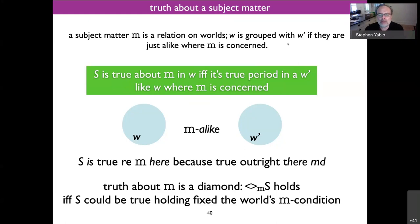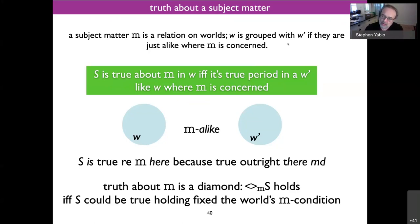A subject matter corresponds roughly to any question turned into an indirect question — like 'what you did last summer.' Worlds are in the same cell just if you did the very same things in those worlds. They're grouped together if they're just alike where the subject matter is concerned. You can think of it oftentimes as an equivalence relation, but sometimes importantly it'll be a similarity relation, or even weaker than that.